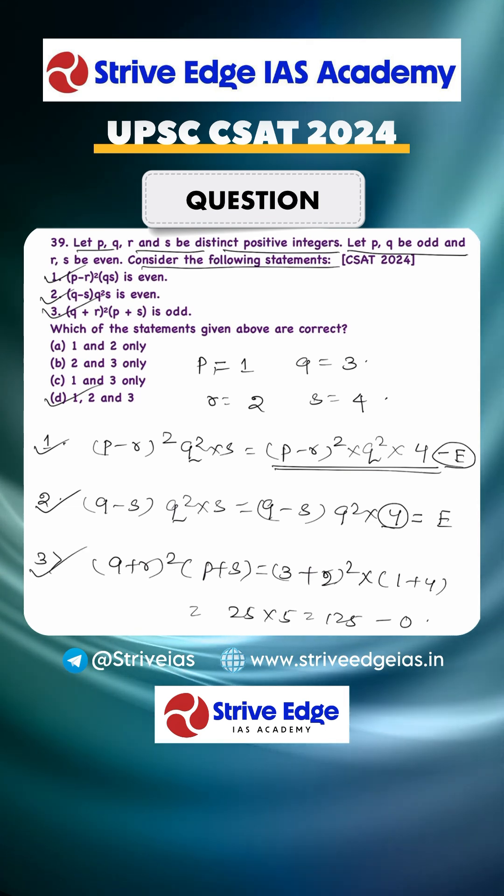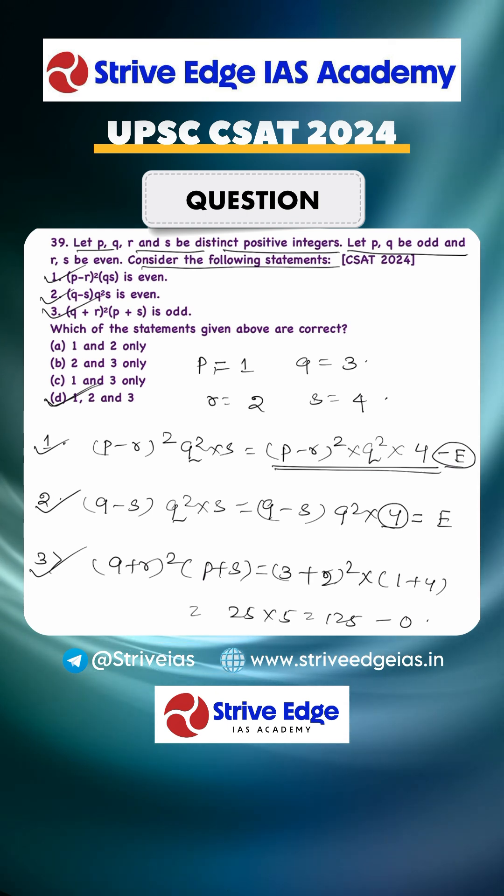Hence the answer is D. The answer is D, that is 1, 2, and 3. So let's see here, so let's pull this number.